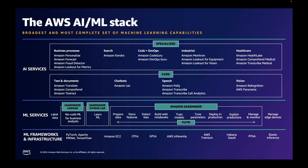To take a deeper look at the stack, let's start at the bottom layer. Here we have services that are tailored for developers with machine learning and data science expertise. This includes the most popular frameworks and infrastructures, a multitude of ways to train and infer models, including CPUs, GPUs, custom ASICs, FPGAs, and even elastic inference capabilities.